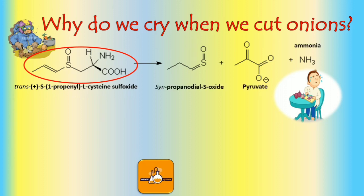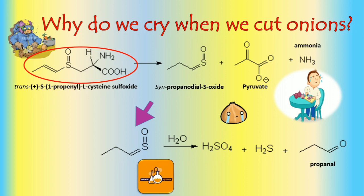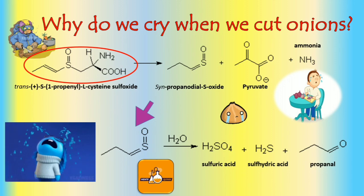This last molecule is responsible for eye irritation, and it is believed that it is lacrimogenic, because in contact with water it decomposes, producing propenylsulfenic acid and sulfuric acid. It is assumed that the sulfuric acid, being so strong, is the one that damages the conjunctival membrane, producing the tearing.